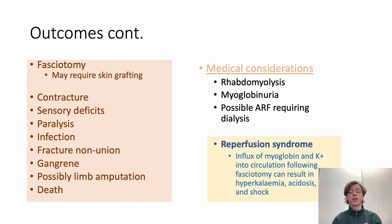Medical considerations during treatment include rhabdomyolysis, with myoglobinuria from rapid muscle breakdown potentially leading to acute renal failure requiring dialysis. Reperfusion syndrome should also be noted: following fasciotomy or release, an influx of myoglobin and potassium into the circulation can result in hyperkalemia, acidosis, acute kidney injury, and shock. This should be closely monitored during any treatment.